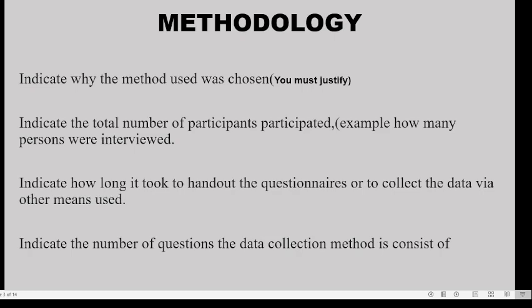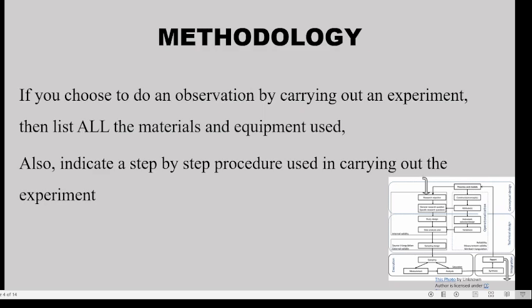For example, indicate how many persons were interviewed, how many persons received questionnaires, and how many persons participated in the experiment. Also indicate how long it took to handle the questionnaires or to collect the data via whatever means you used. Indicate the number of questions the data collection method consists of — whether 10, 5, or a mix of multiple choice and short answer — and how many of each type.